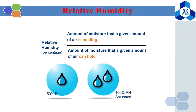Next is relative humidity. Relative humidity is the amount of moisture that a given amount of air is holding compared to the amount of moisture that the same amount of air can hold — that means the maximum it can hold, which we call 100% or saturated. For example, if the air only has about 50% of the water it could hold, the relative humidity is 50%.